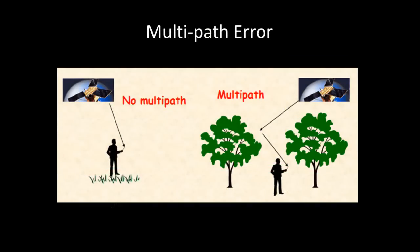A multipath error is the idea that the GPS signal is reflected off objects before reaching the receiver. Thus again, modifying the time the signal takes to travel from the satellite to the receiver.